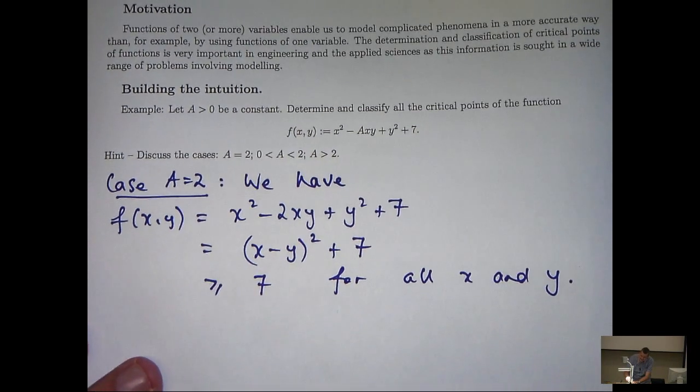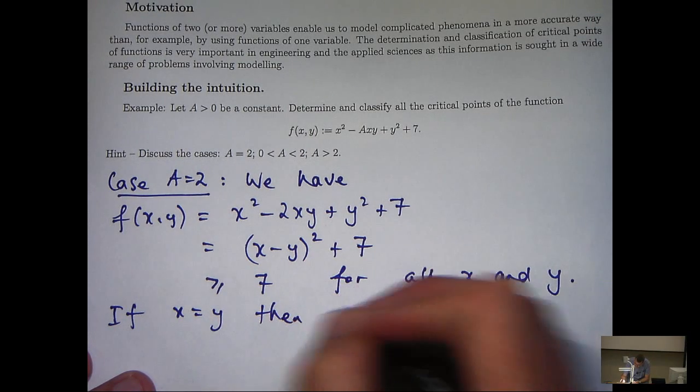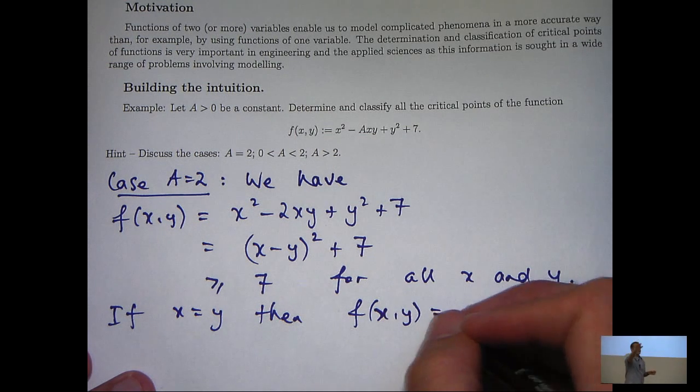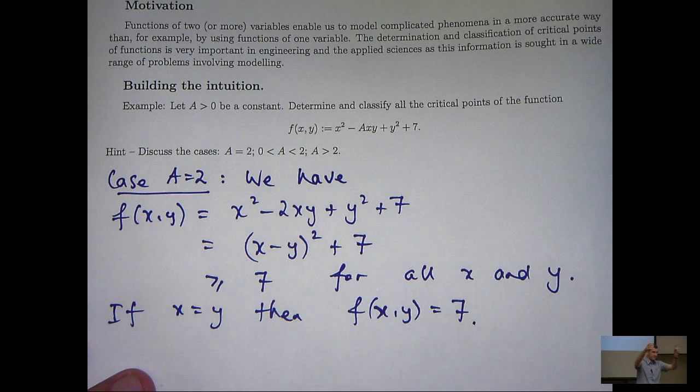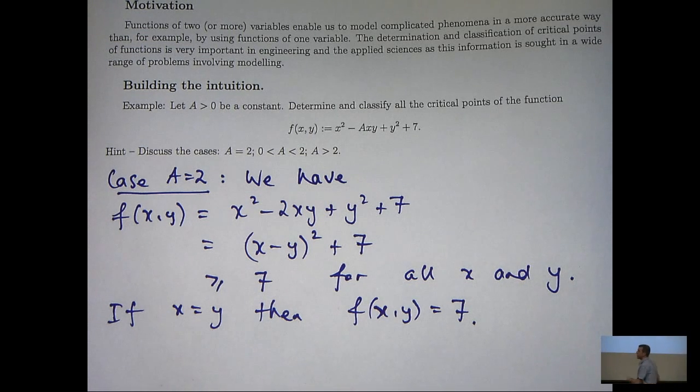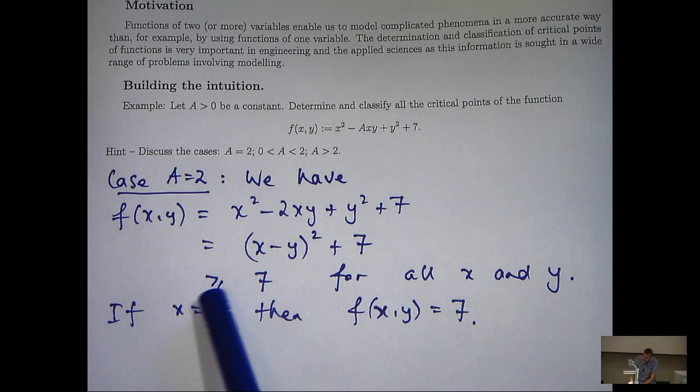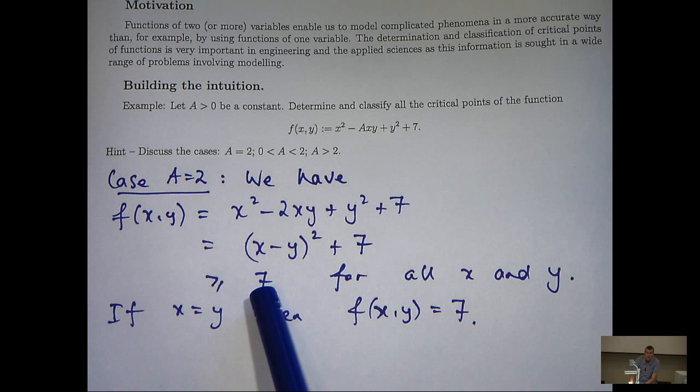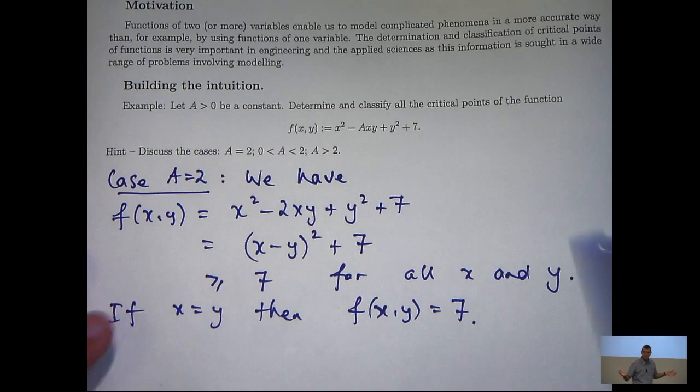In particular, if x equals y, then the seven is actually achieved. So what we can say from this, just algebraic manipulation, is that if a equals two, then f has a minimum along the line x equals y. The minimum value of f is seven. And in particular, it's a global minimum because it holds for all x and y.